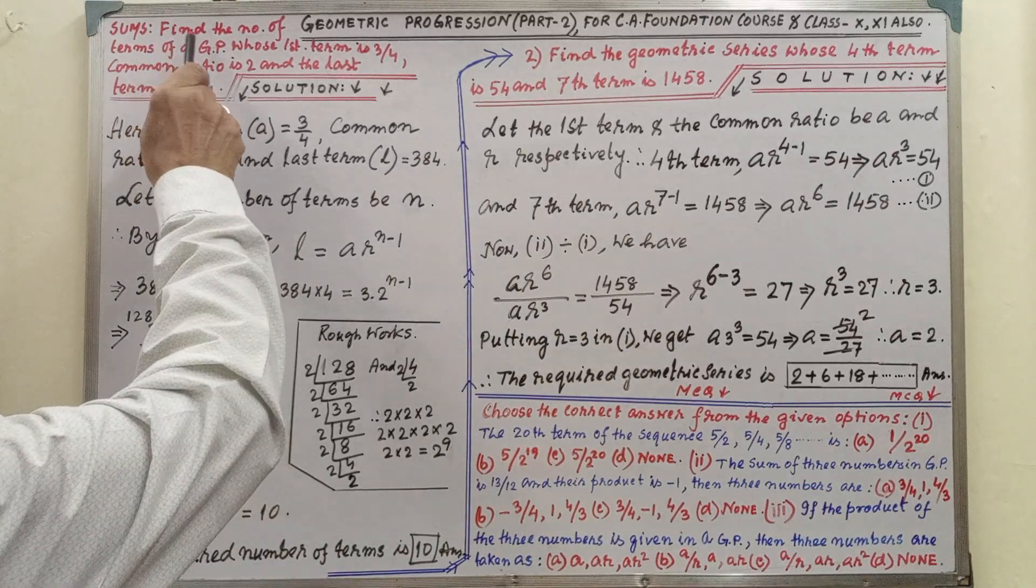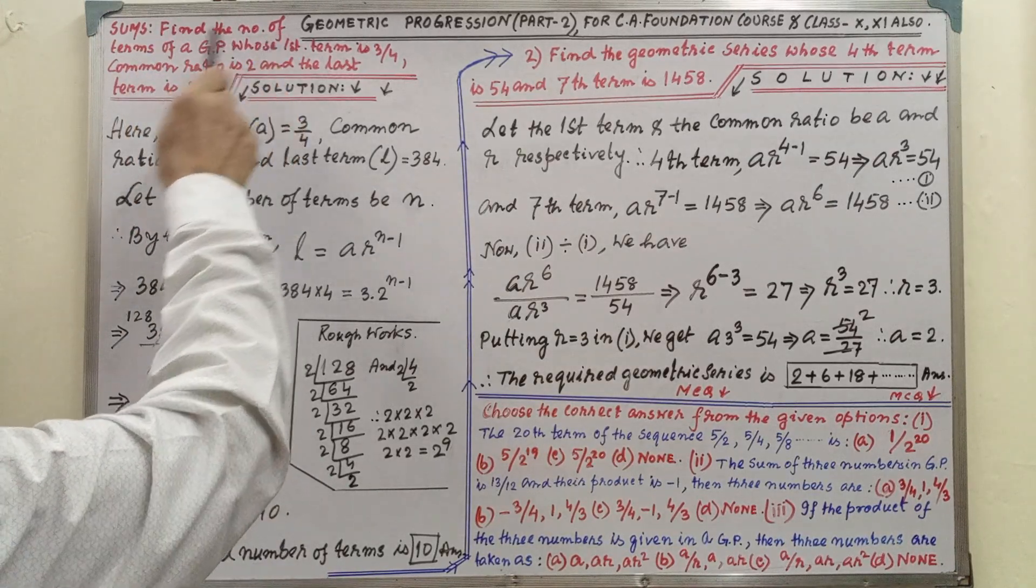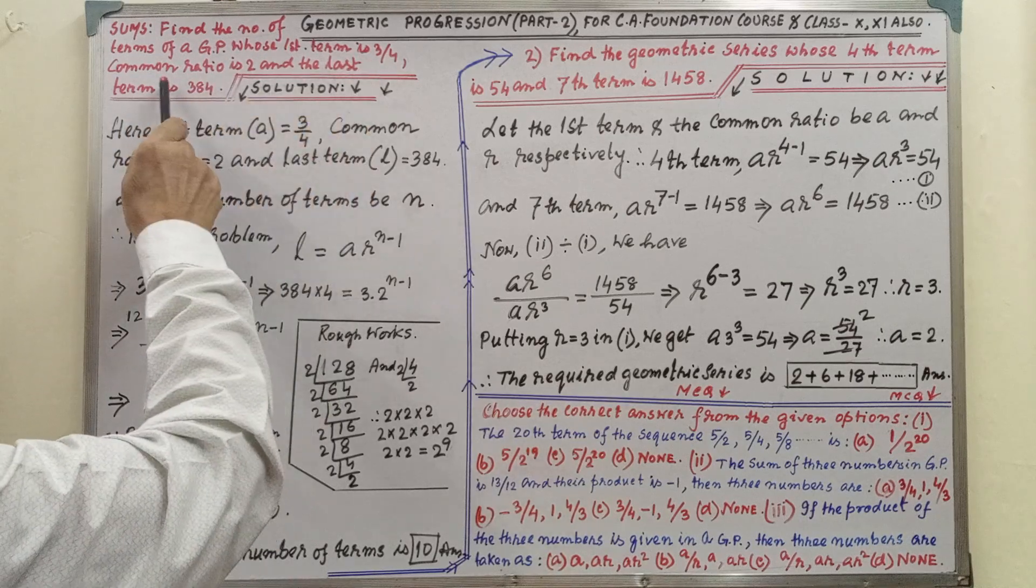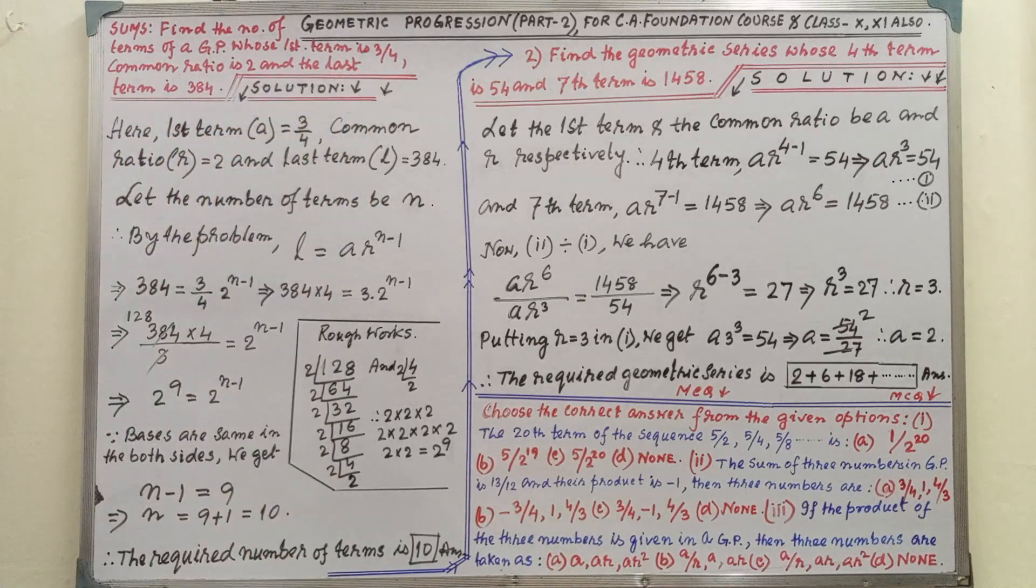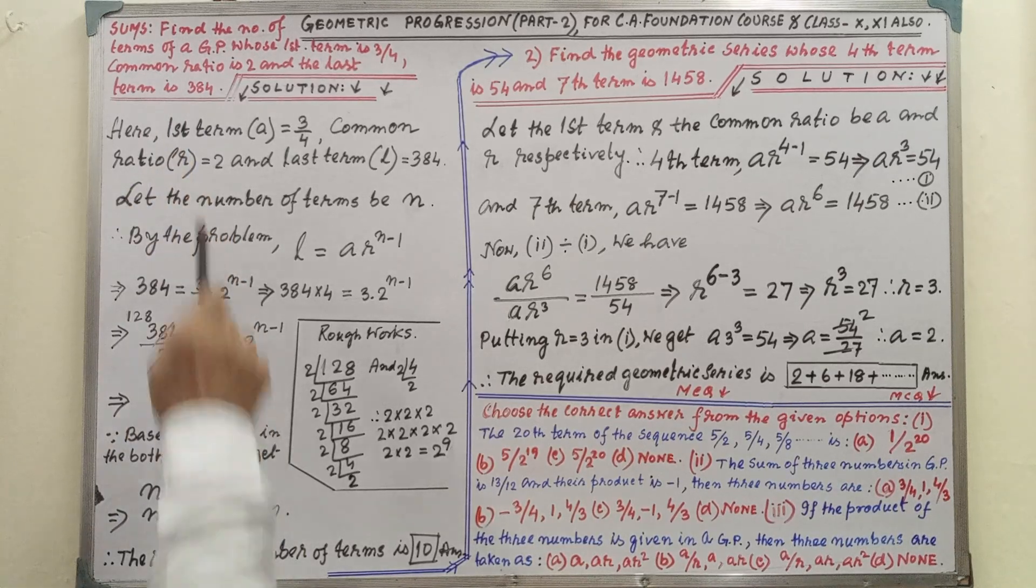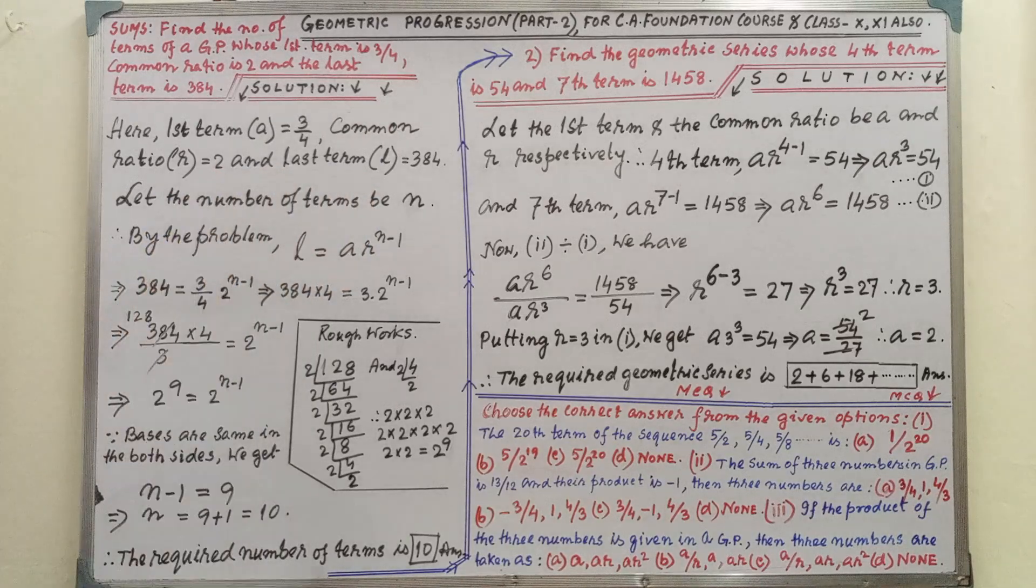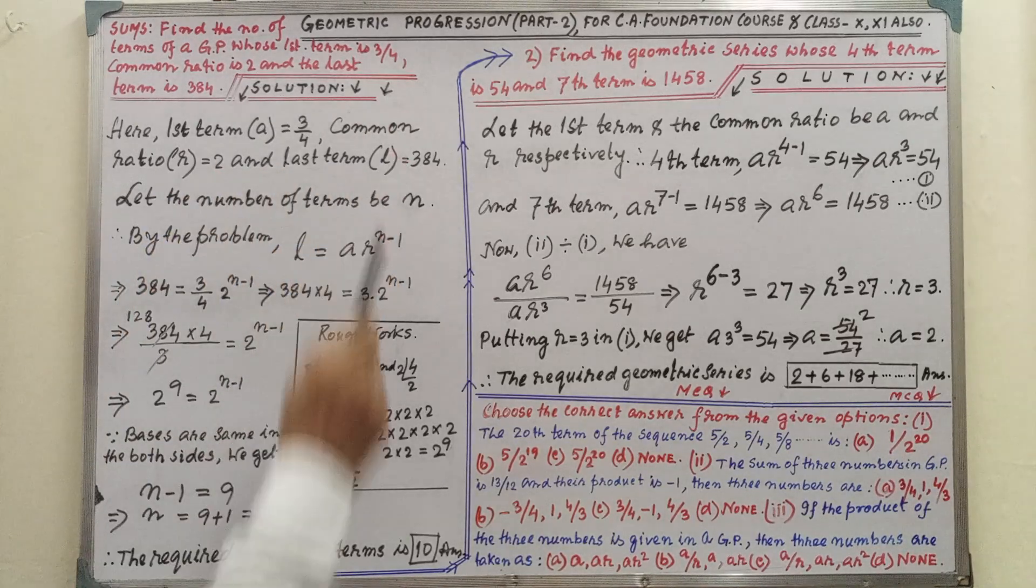Sum Number 1: Find the number of terms of a GP whose first term is 3/4, common ratio is 2, and the last term is 384. Solution: Here first term A = 3/4, common ratio R = 2, and last term L = 384.